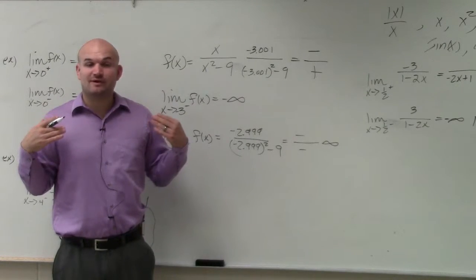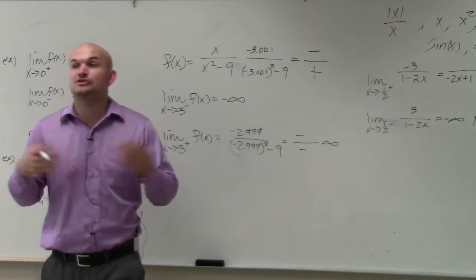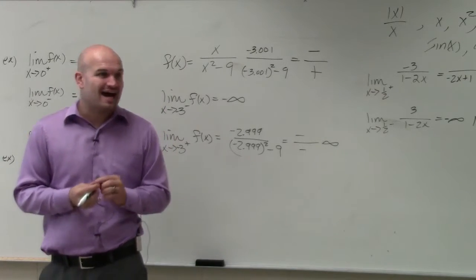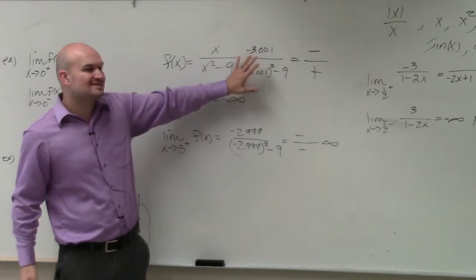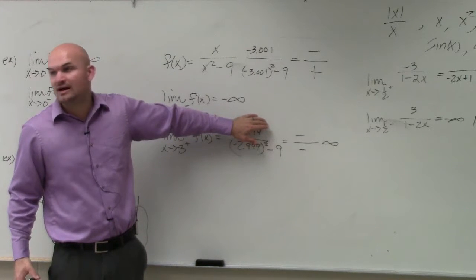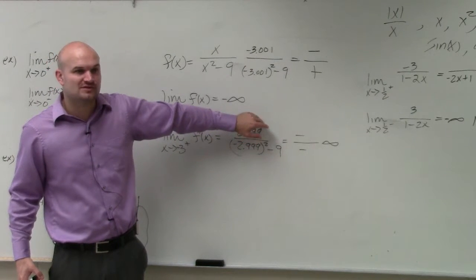So therefore, without even knowing what the graph looks like, without even knowing to graph it, or with the table, I can just pick values and use their signs to help me determine what the left and right hand behavior is going to be of those limits.